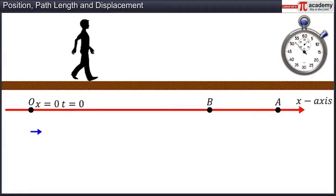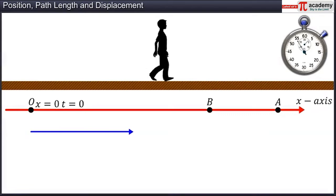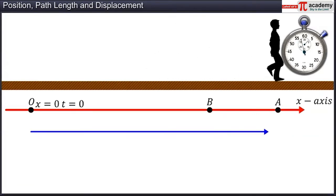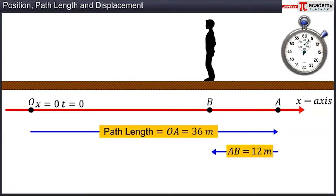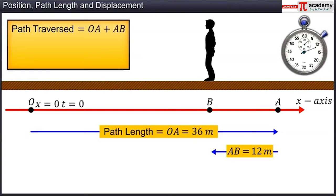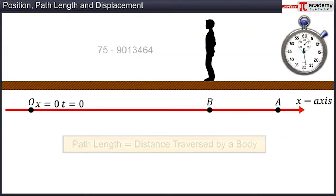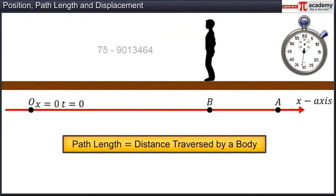In the second instance, the man moves from O to A and then moves back from A to B. The distance between points A and B is 12 meters. The path length traversed by the man is OA plus AB, equal to 36 meters plus 12 meters, which is equal to 48 meters. The path length is a scalar quantity as it has only magnitude and no direction. Path length is the distance traversed by a body.